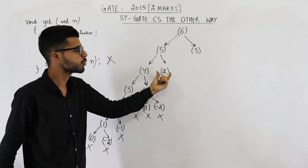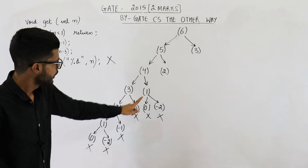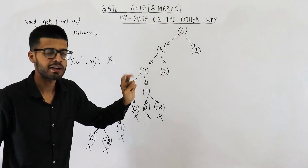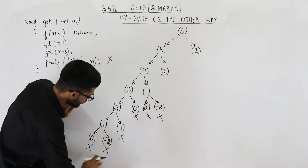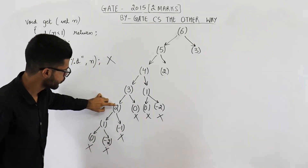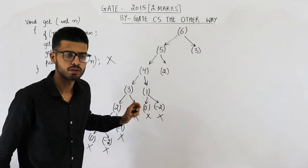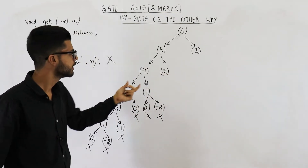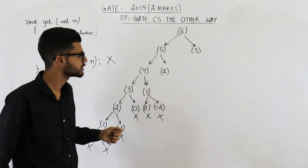Now let us see what is going to happen here. Here we are calling the function with 2 as parameter. That means this entire subtree will be copied — whatever is happening in the previous get(2) call will happen here also, because here also the parameter is 2 and the function is the same.